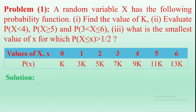Hi everyone, welcome back to this tutorial. In this video I am going to determine the value of K and the probability values for the following probability function. The given tabular column has X values 0, 1, 2, 3, 4, 5, 6 with corresponding probability values K, 3K, 5K, 7K, 9K, 11K, and 13K. First, find the value of K. Second, evaluate P(X < 4), P(X ≥ 5), and P(3 < X ≤ 6).